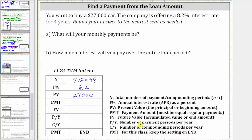FV is the future value, or the ending amount after the four years. After four years the loan is paid off, and therefore the future value is zero. The number of payment periods per year and the number of compounding periods per year are both 12, because you are making monthly payments. Whenever we're not specifically told the compounding periods, we assume it's the same as the number of payments per year.